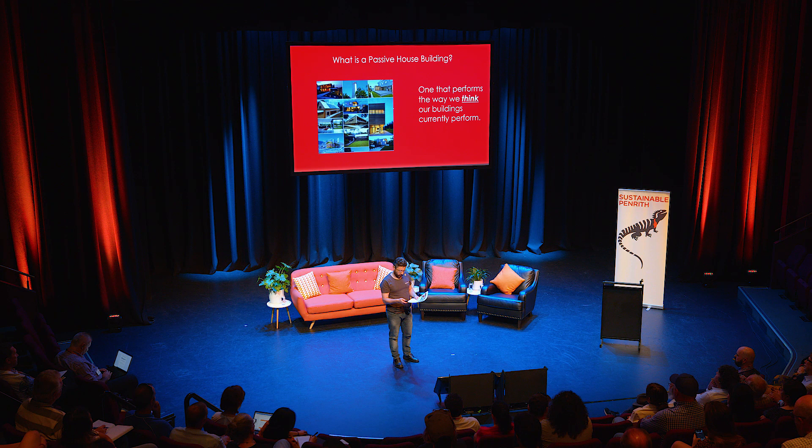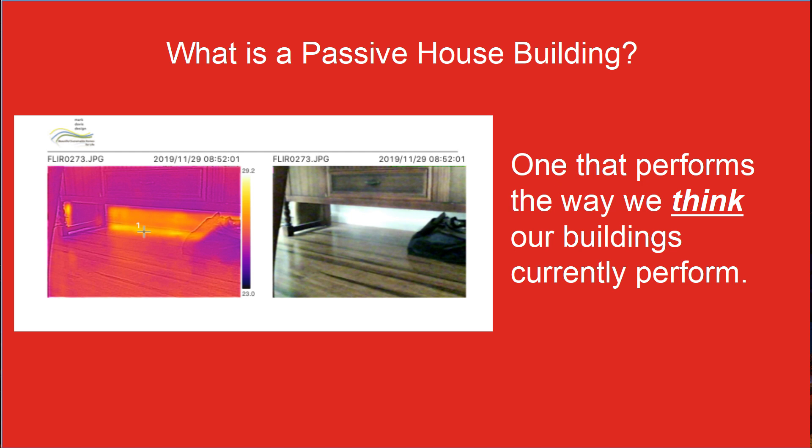Here's a thermal image I've taken of a skirting board to demonstrate one of these leaks. You can probably see the yellow line there — that's hot air leaking in through the wall structure, and this is only about a 33 degree day, 25 degrees inside with air conditioning on. If it was 40 or 45 degrees that leak would be much bigger.